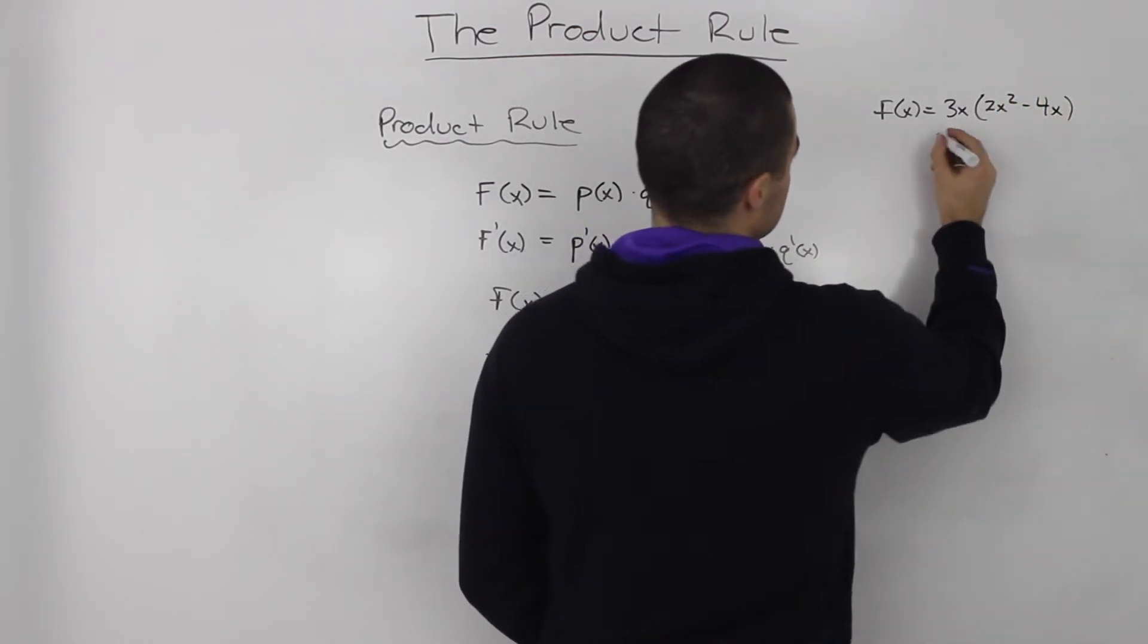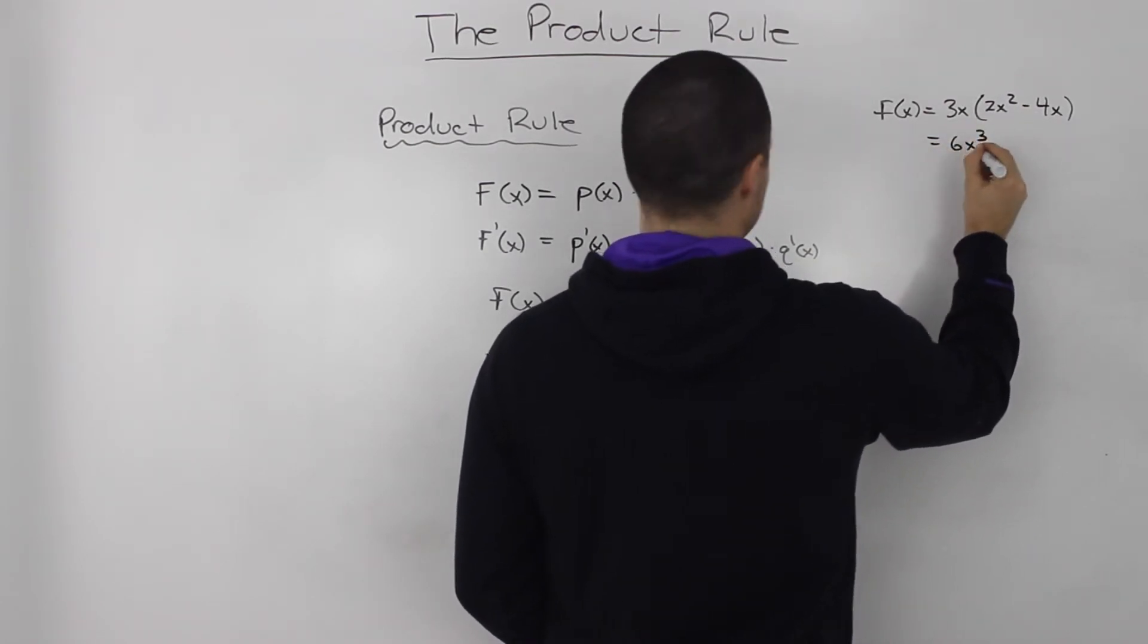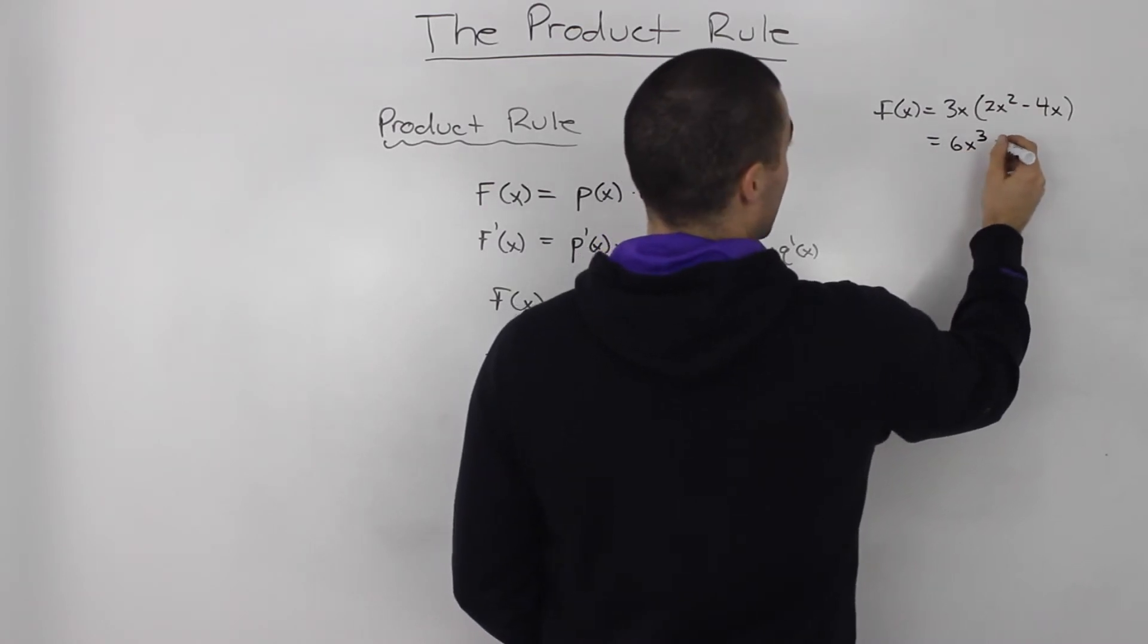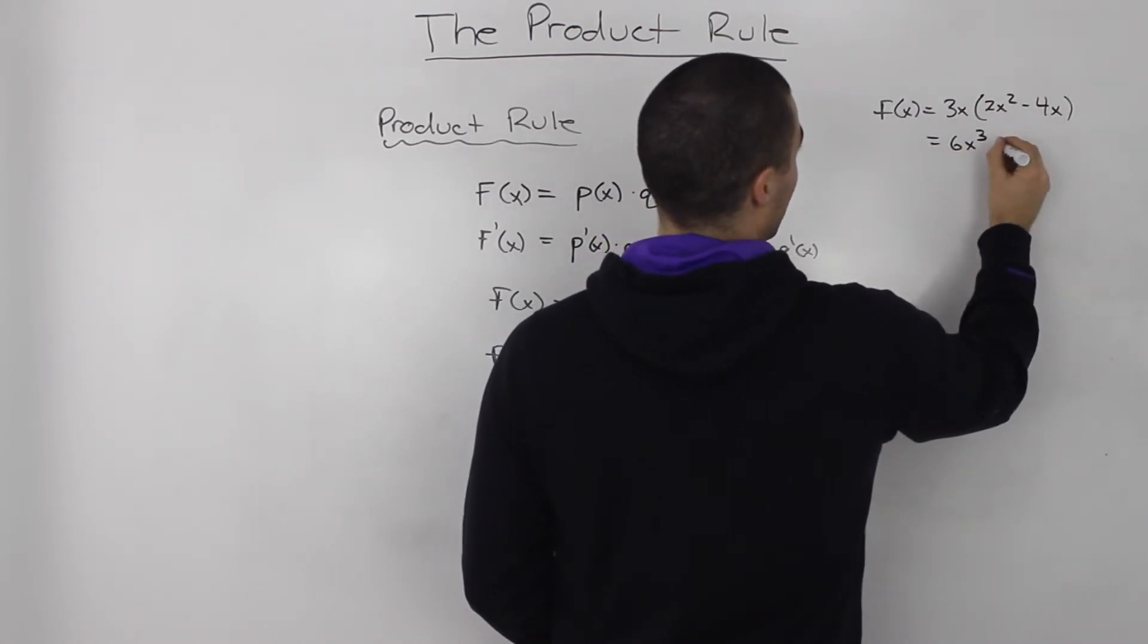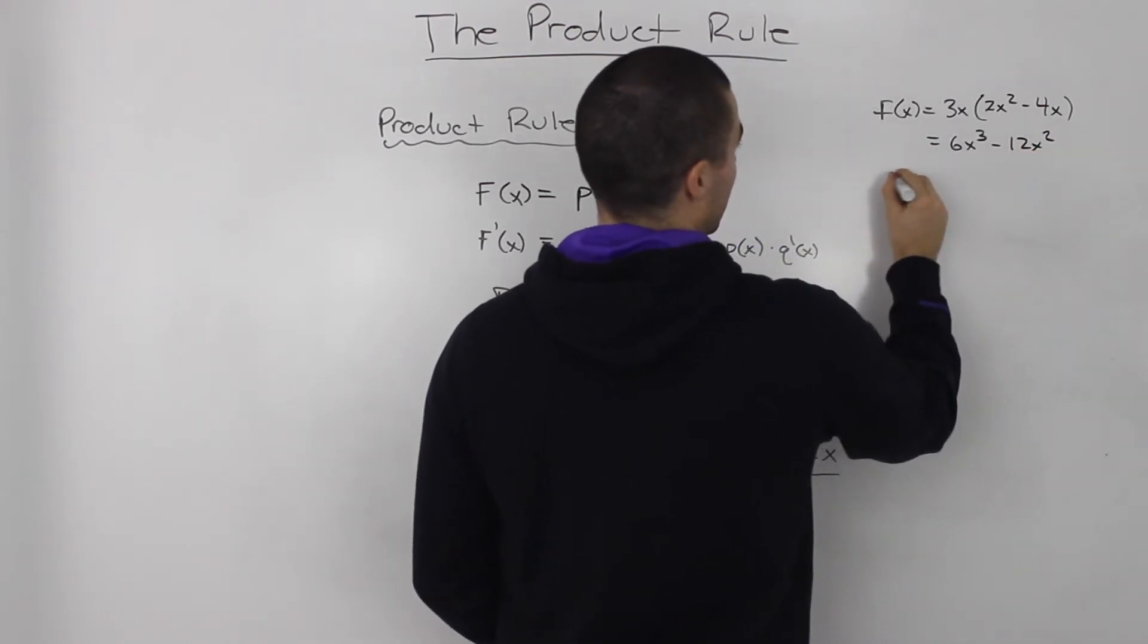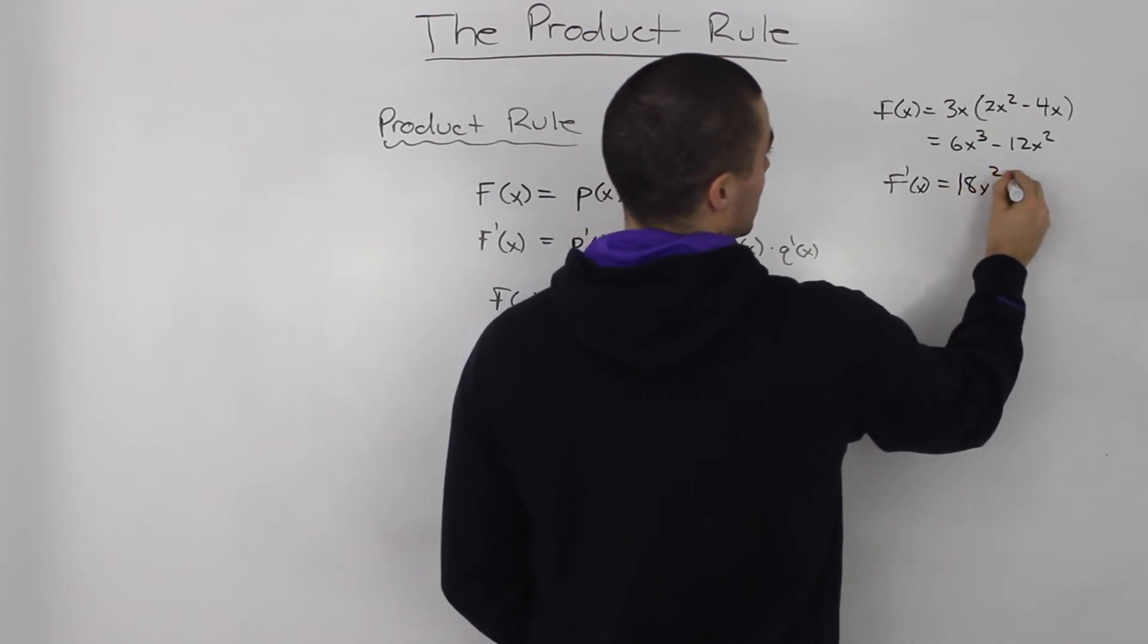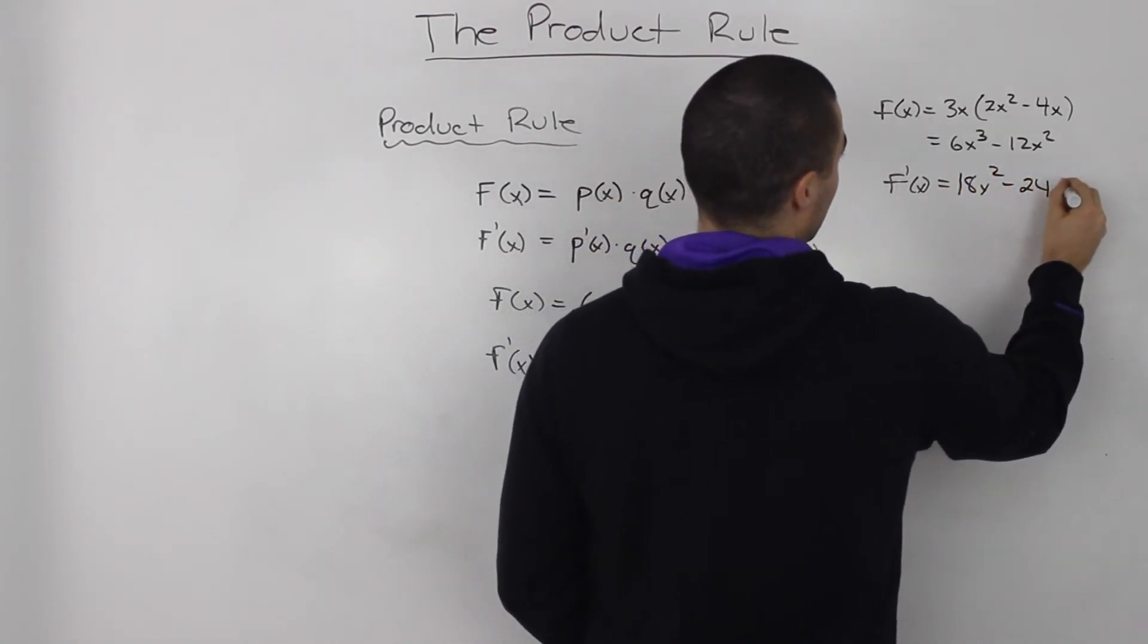If we distribute the 3x inside, 3x times 2x squared, that's 6x cubed. And then 3x times negative 4x is negative 12x squared. And then, we just take the derivative of that and we get 18x squared minus 24x.